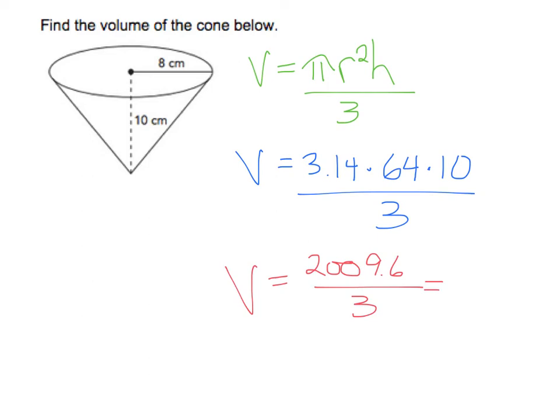which will give us 6,006, and we'll go to 2 decimals, 0.87. And then that would be centimeters, since it's volume, it is cubed. So 669.87 centimeters cubed.